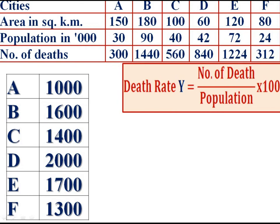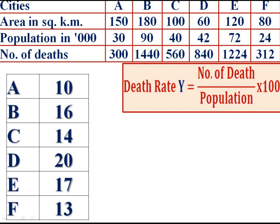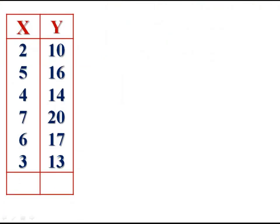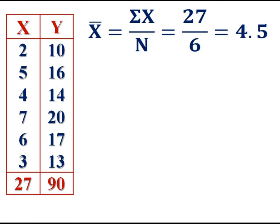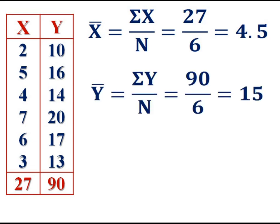All these values are multiples of hundred, so remove two zeros — divide all by 100. The y variable values become: 10, 16, 14, 20, 17, and 13. Put the x and y variables in the first two columns and get their summations. Arithmetic mean: x-bar = 27 divided by 6 = 4.5; y-bar = 90 divided by 6 = 15. Since the arithmetic mean of x is close to 4, take assumed mean as 4 for x and 15 for y.